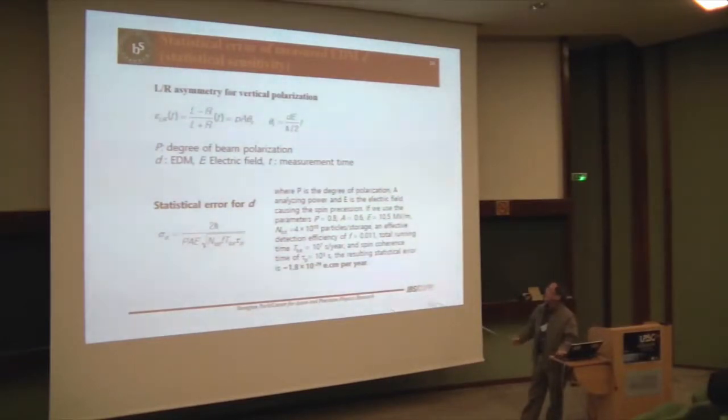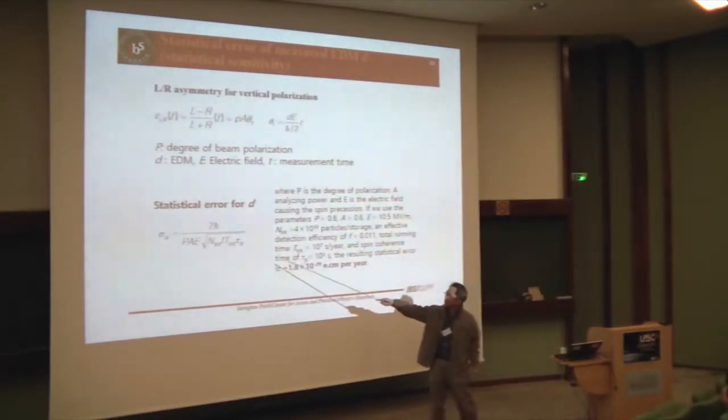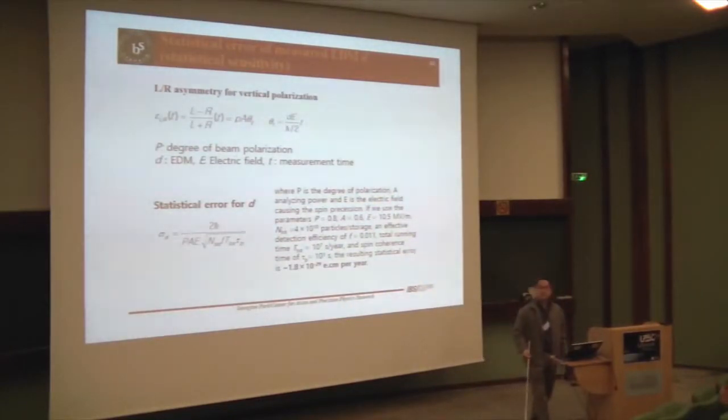Sensitivity, as I said, let me give you one example. Let's say initial polarization is 80%, analyzing power 0.6%, and electric field 1 MV per meter, and blah, blah. If you combine all these numbers, and if you calculate, this is the proton EDM sensitivity, the target sensitivity that we are aiming.